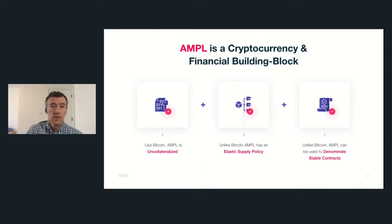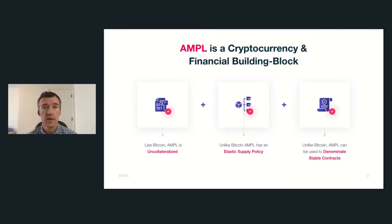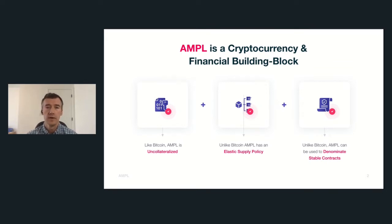Thanks for the intro. My name is Brandon. I'm a developer with Ampleforth Protocol. I can tell you about the protocol and the unit Ample and how it works. Ample is a cryptocurrency, like Bitcoin, and we also call it a financial building block. Like Bitcoin, it is uncollateralized, meaning that it has the same high scalability that something like Bitcoin does — it's not held back by having to be collateralized by any outside assets. But unlike Bitcoin, it has an elastic supply policy, meaning that the supply of Ample can adjust every day according to the needs in the marketplace. This provides a long-term unit of account, and we describe it as the ability to denominate stable contracts.